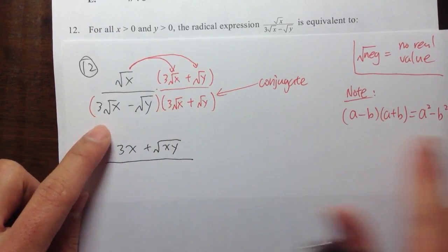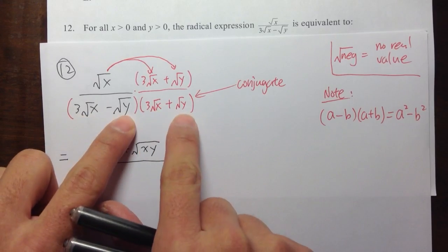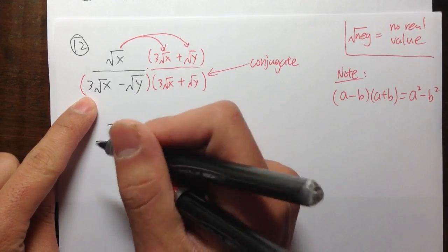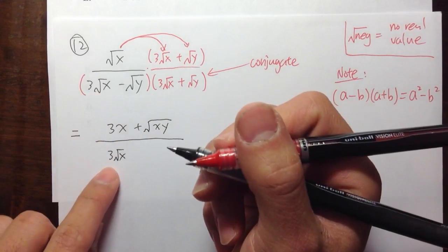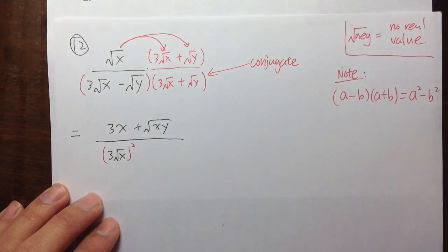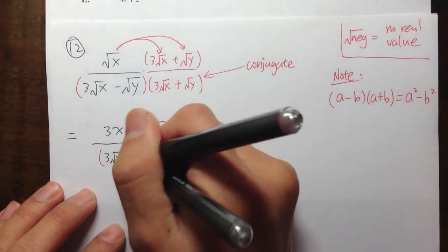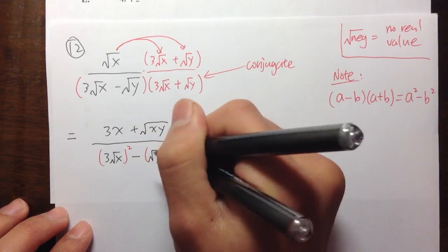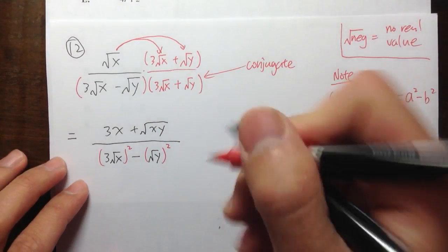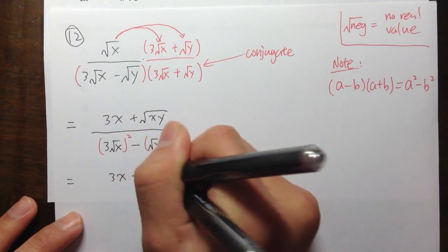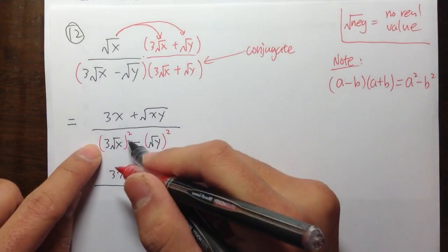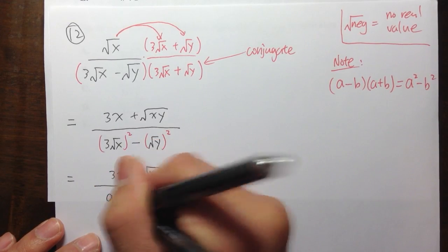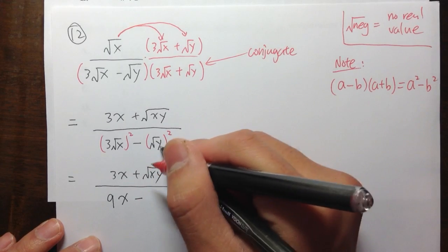On the bottom, I use the (a − b)(a + b) = a² − b² formula. Here a = 3√x and b = √y. Squaring a: 3² = 9 and (√x)² = x, giving 9x. Then minus (√y)² which is just y. So the denominator simplifies to 9x − y.